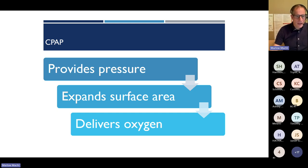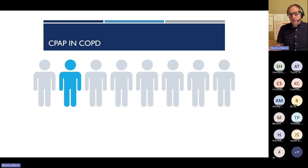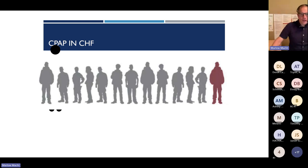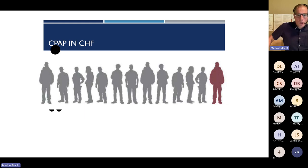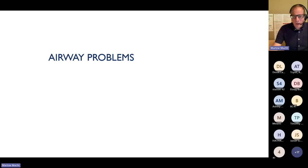CPAP is paired with oxygen, so it delivers oxygen as well. In COPD, for every eight patients treated with CPAP, you can prevent one death. In CHF, for every 13 patients you can prevent one death. Starting in emergency medicine and EMS before we had CPAP in the field, there were so many more patients who got intubated and had longer, harder courses. Now we'll do a quick review of airway problems.